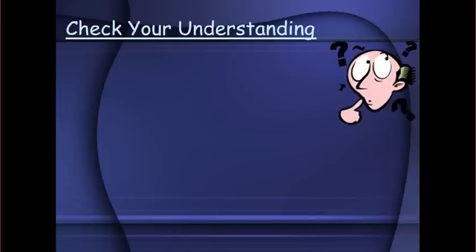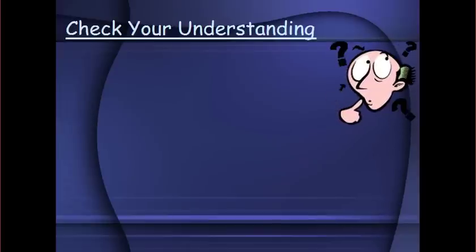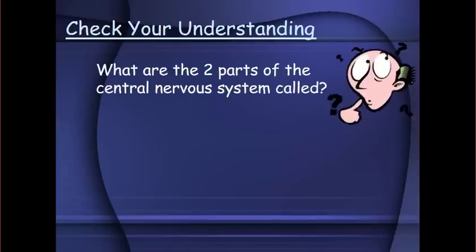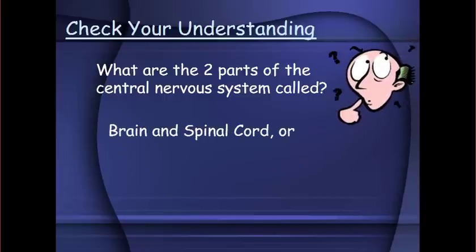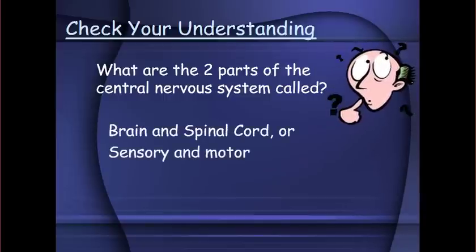Let's check your understanding of what we've just covered. What are the two parts of the central nervous system called? Is it the brain and spinal cord, or is it sensory and motor?